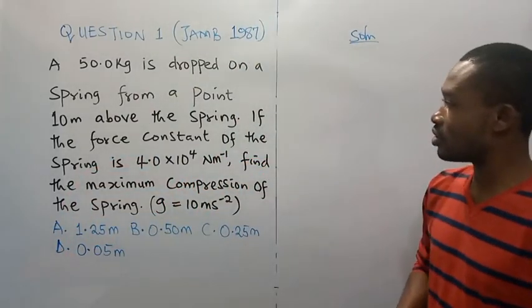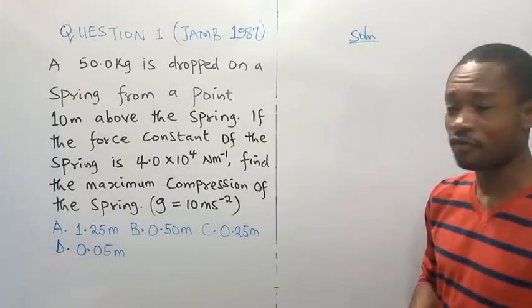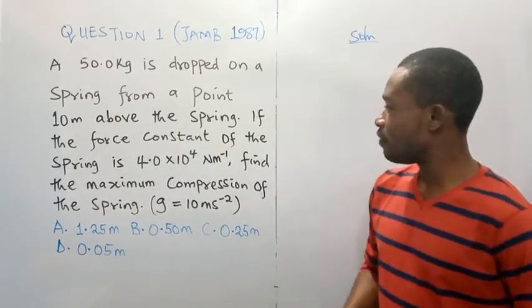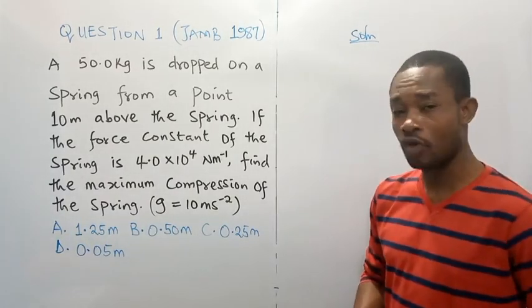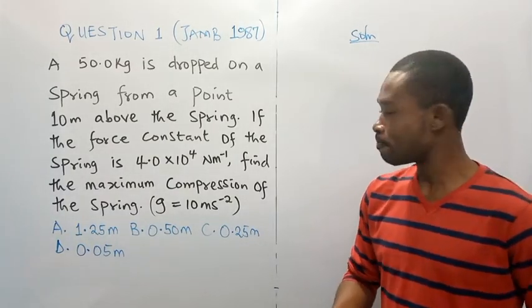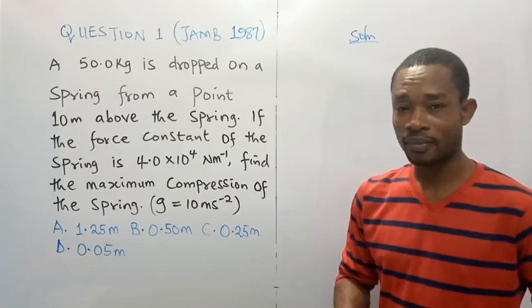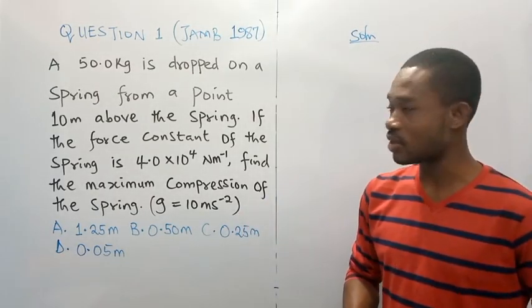The question here reads: a 50.0 kg is dropped on a spring from a point 10 m above the spring. If the force constant of the spring is 4.0 times 10 to the power of 4 Newton per meter, find the maximum compression of the spring. g equals 10 m per square second.